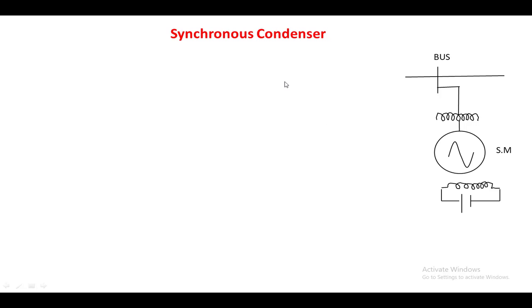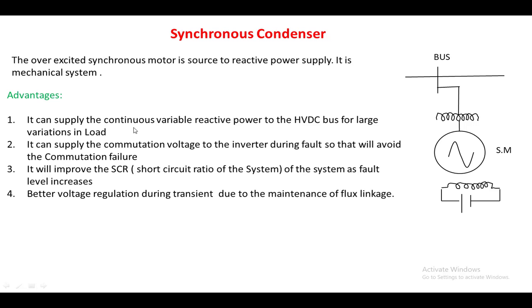The synchronous condenser has advantages and disadvantages. It can supply continuous variable reactive power to the HVDC bus during large load variations. It can also supply commutation voltage to the inverter, and if a fault occurs causing supply to drop to zero, commutation failure can be avoided. It improves the short circuit ratio during fault conditions.